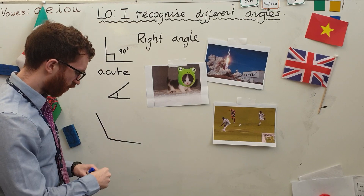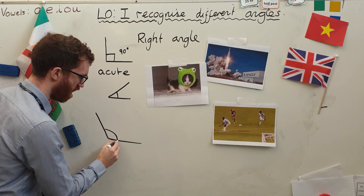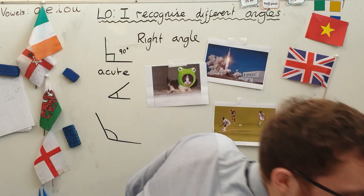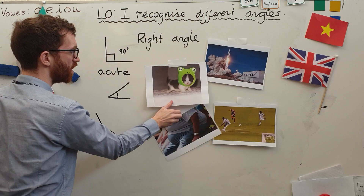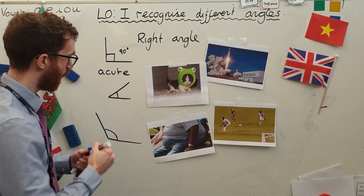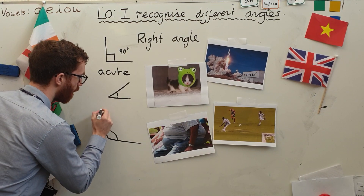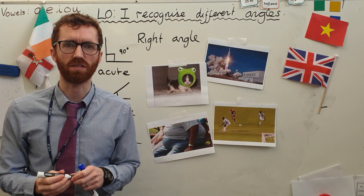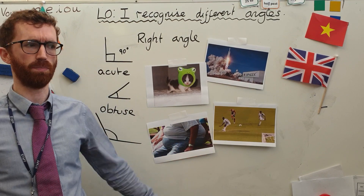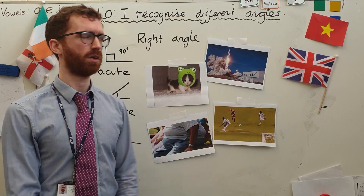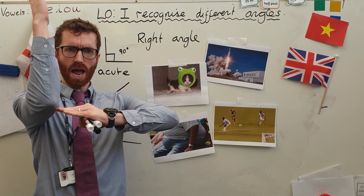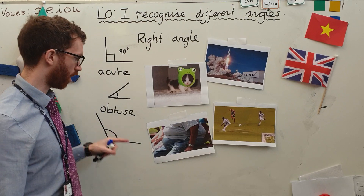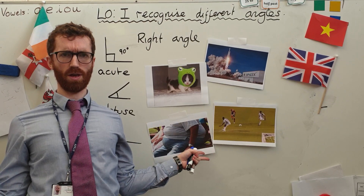And now we've got this one here — that is one big angle. It's more than 90 degrees, it's a little bit of a large size. Potentially a little bit obese! And we're going to call this an obtuse. Sounds a bit like obese, doesn't it? Obtuse when it's really big. Can you say obtuse? So we've got right angle at 90 degrees, we've got acute angle, and we've got obtuse angle.